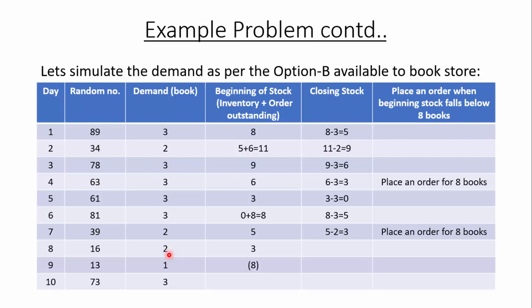At the beginning of day 8 the stock is 3 and the demand is 2, so the closing stock is 1. At the beginning of day 9 the stock is 9 — 1 from the previous day plus 8 books received — and the demand is 1, so the closing stock is 8. At the beginning of day 10 the stock is 8, demand is 3, so the closing stock is 5.